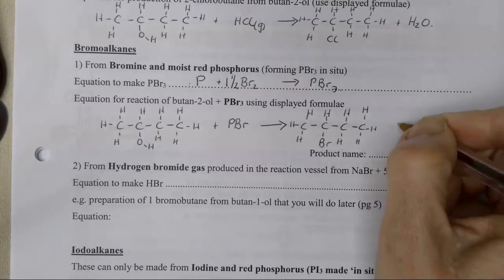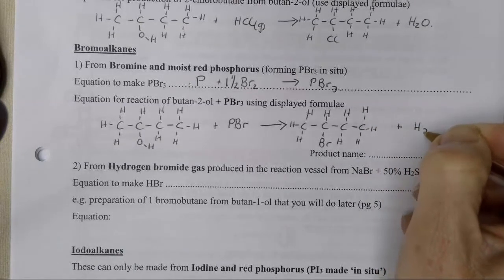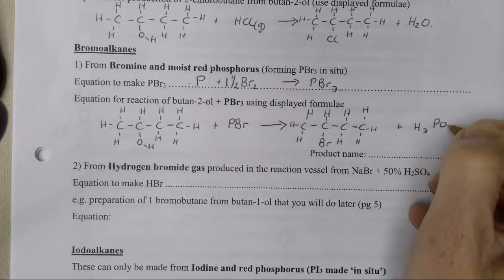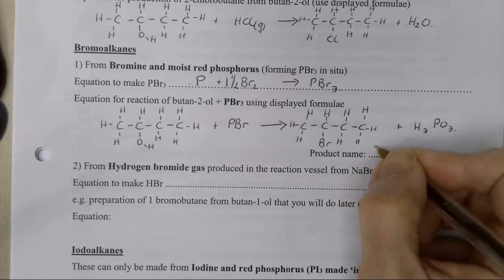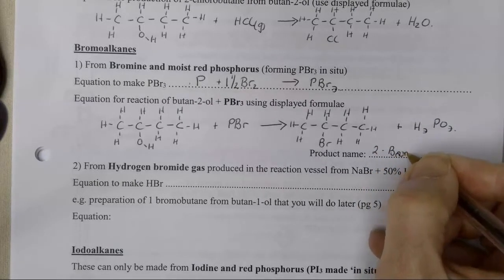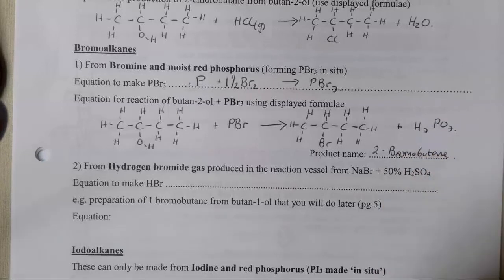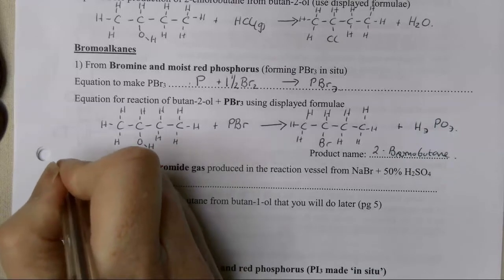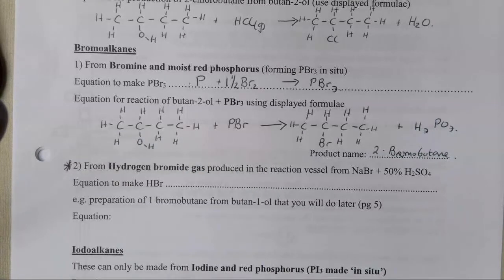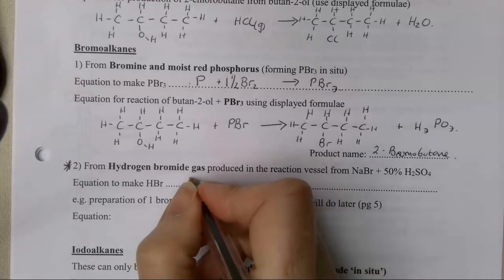I have 2-bromobutane as my product. This time, I get H3PO3 as a product. That's not the more common way of making a bromoalkane. This one is far more common and useful. I want you to star that one because that's the one that we're going to use in the practical. This is from hydrogen bromide gas. You've seen it in your halogens pack.